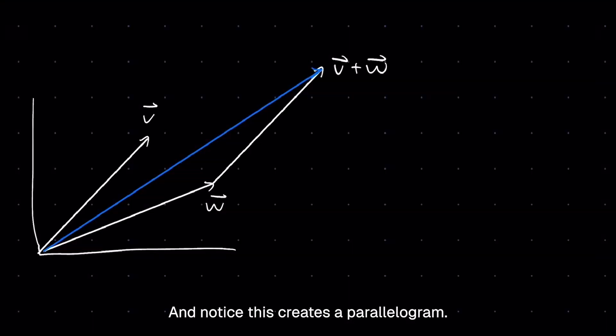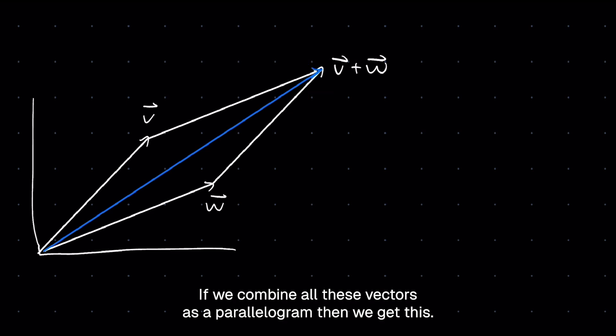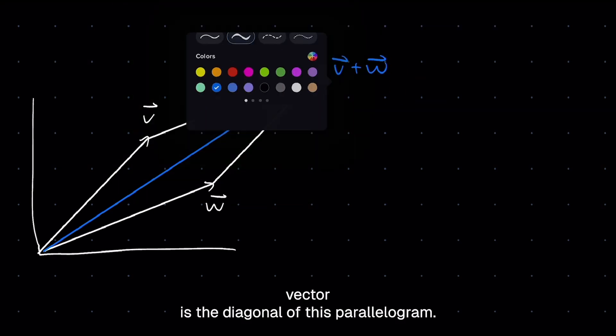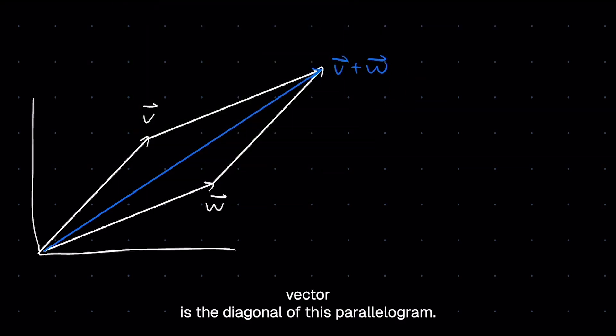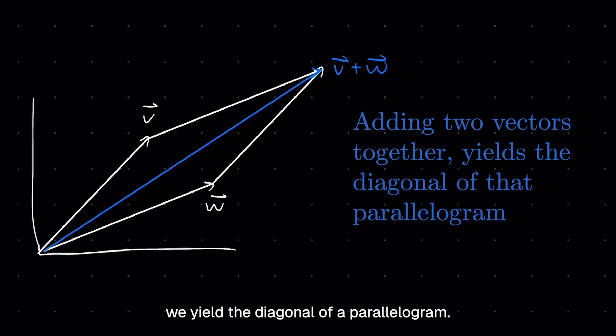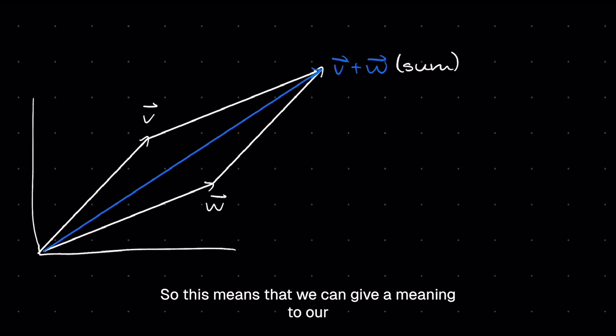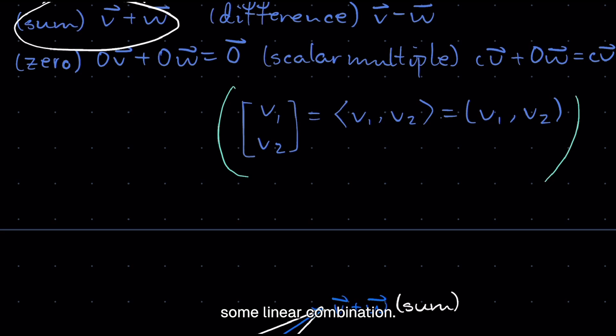So this is V plus W. And notice, this creates a parallelogram. If we combine all these vectors as a parallelogram, then we get this. And notice that V plus W, this blue vector, is the diagonal of this parallelogram. So basically, if we add two vectors together, we yield the diagonal of a parallelogram. And that is very useful because now we know that the sum of two vectors geometrically resembles the diagonal of a parallelogram. So this means that we can give a meaning to our sum linear combination.